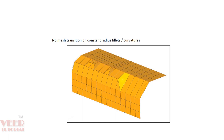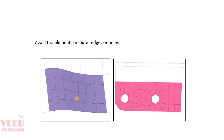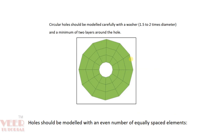We have mesh transition here — tria elements and quad elements mixed together. We should avoid this. Again, on the outer edge, we should avoid the tria element. Here we can see there are trias on the outer edge, so we should avoid this. And whenever we have a circular hole, we should have two layers of elements around it.